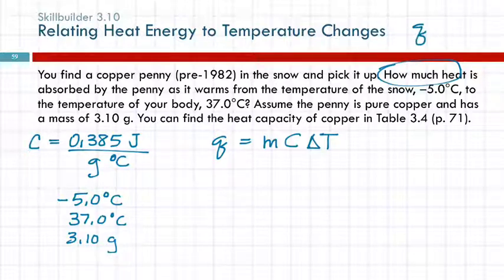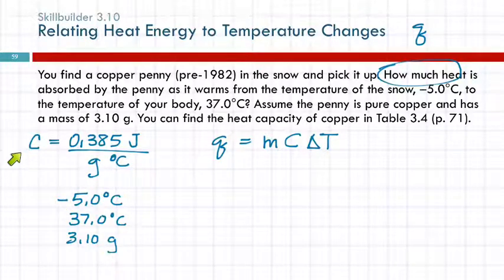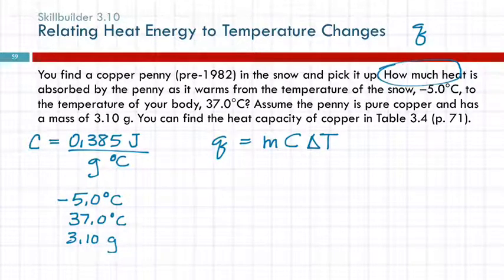Heat has the symbol Q — don't ask me why, I have no good explanation for that. Q is what we need to solve for, so we need to find mass, specific heat capacity, and the change in temperature. The specific heat capacity we already looked up. Which of these is the mass? The 3.10 grams. Even if you didn't see the word mass, gram is a unit of mass, so we should be able to recognize that.